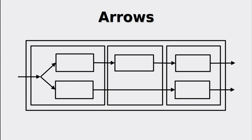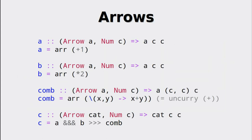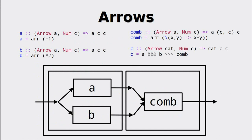That raises the question: how do we combine the tuples afterwards? In order to answer this, let us look at an example. Here we have two arrows, a and b, doing some computation and the comb arrow — that is not used in order to fix your hair, but to combine the values of a tuple into a single value. There is no special function to do this kind of operation, even though we can use the uncurry function to have this kind of effect. The resulting arrow c is the combination of a, b and comb.